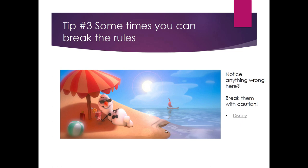Tip number three: sometimes you can break the rules — but break them with caution. Can you see what rule is broken in this scene? Where is the sun? Now where are the shadows? If the sun is actually back behind the figure, you'd have the shadow casting toward the camera — but that's not what's happening. If you guessed the sun should be way up above casting straight down, you're right — look at the shadow falling straight down. So you can break the rules sometimes; you just have to be careful.